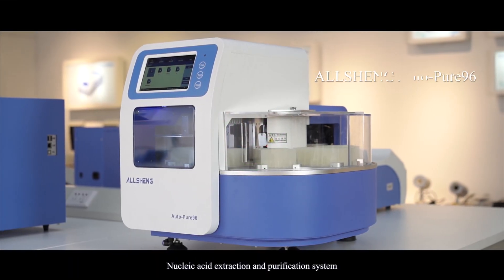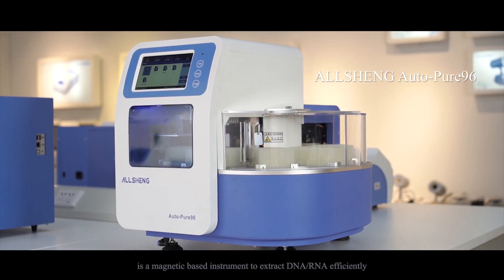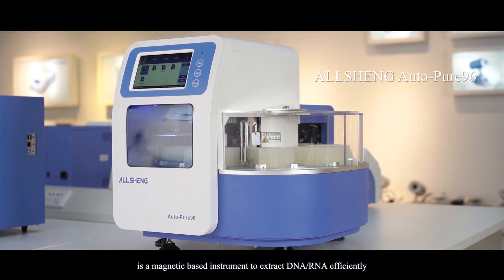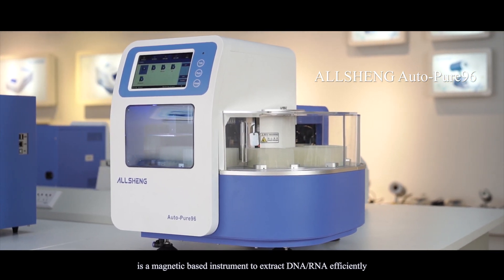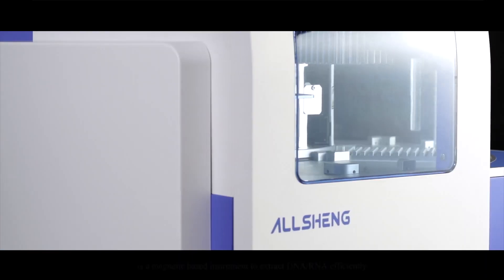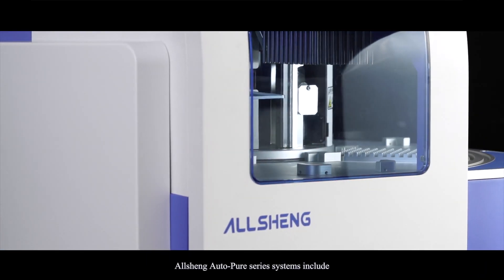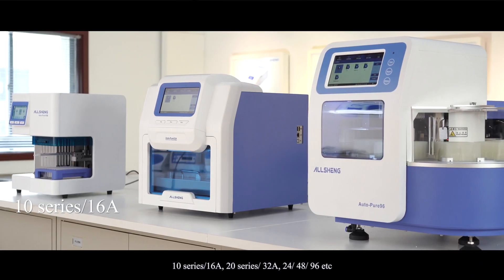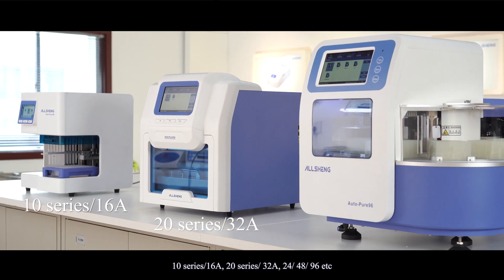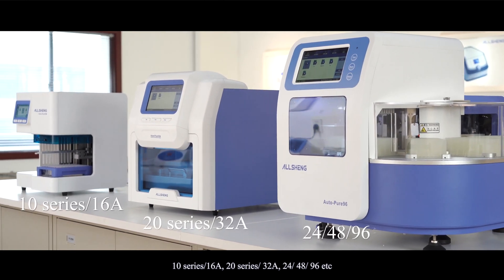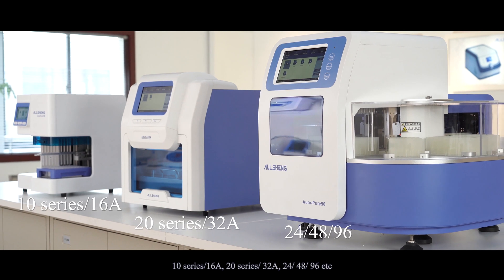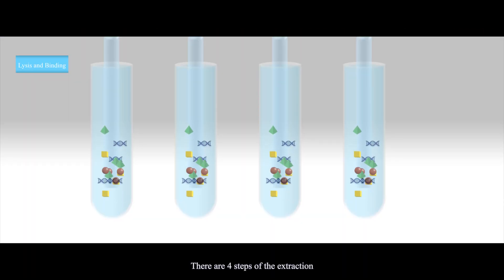Nucleic acid extraction and purification system is a magnetic-based instrument to extract DNA and RNA efficiently. Ocean Auto Pure series systems include 10 series, 16A, 20 series, 32A, 24, 48, 96, etc. There are four steps of the extraction.